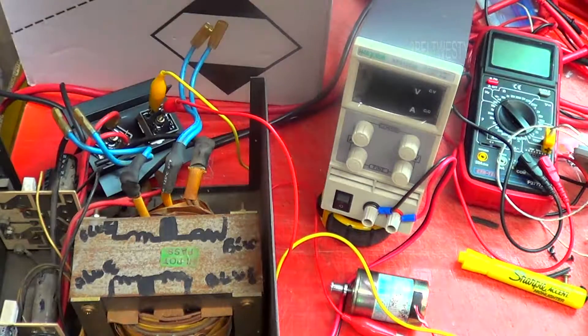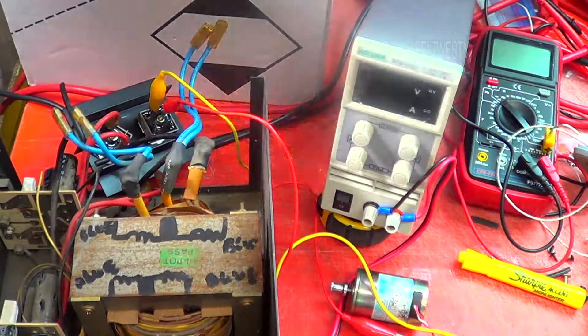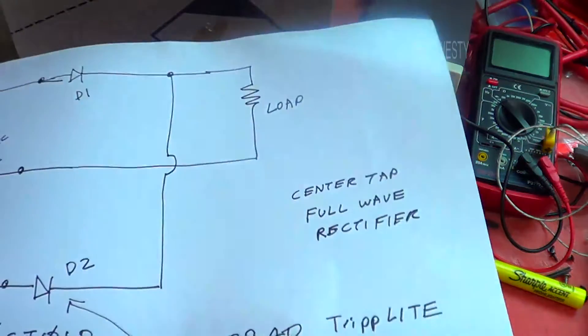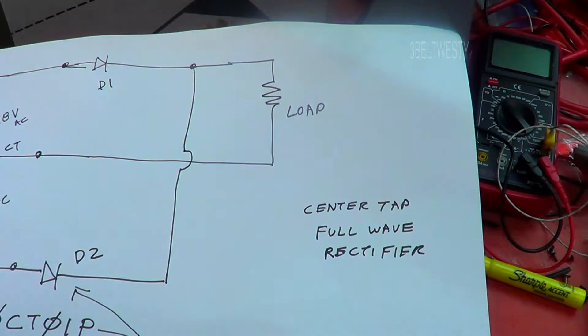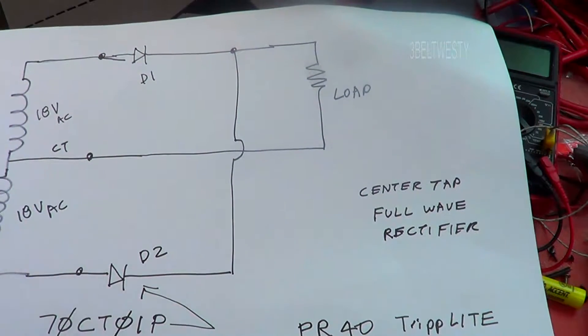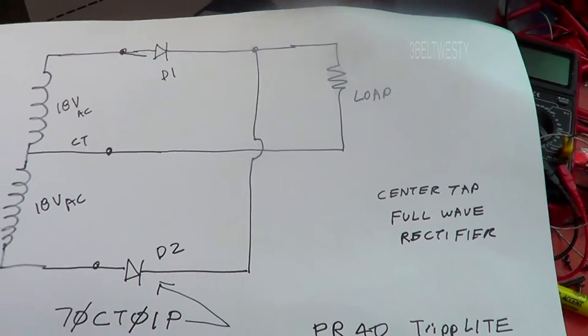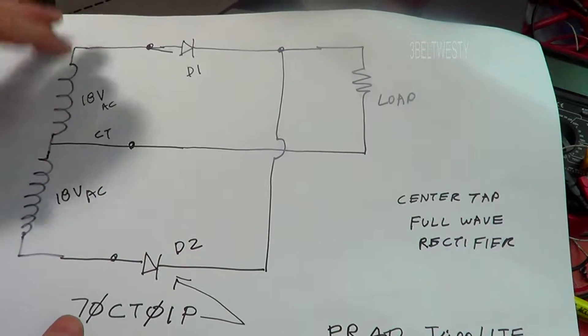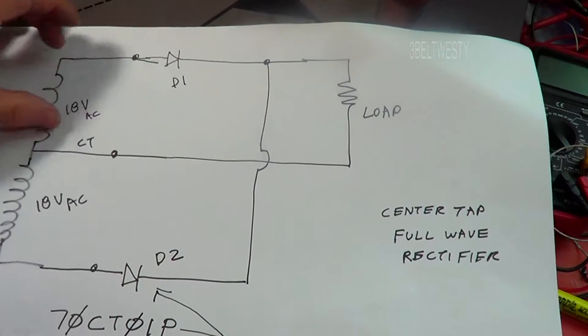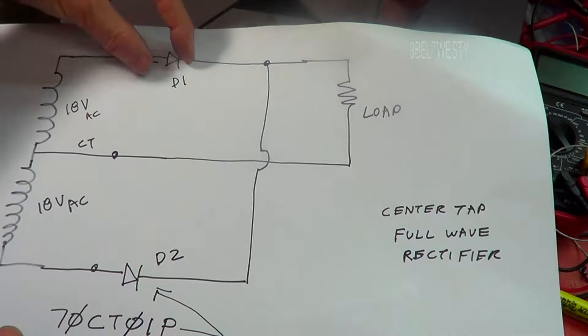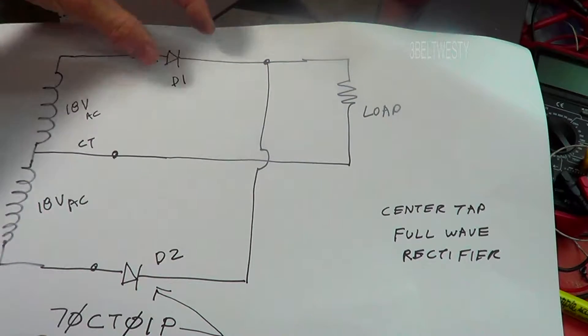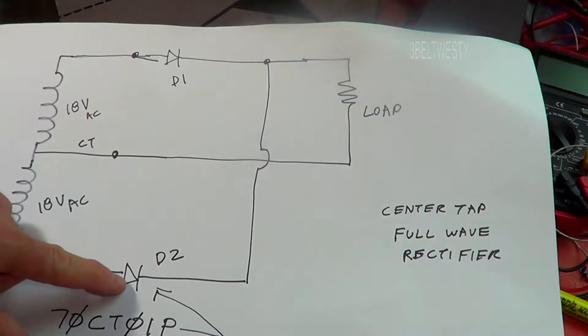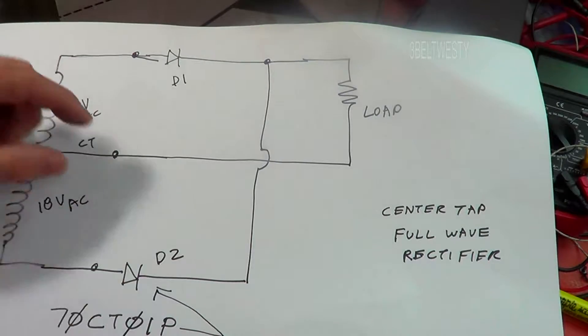I'm going to go through real quick and then I'm going to go into the details later in case you're interested. The way this circuit works is we have the output of the big transformer for power. It's got a center tap. That module acts as one big diode. It goes to the load. This other module acts as one giant diode.